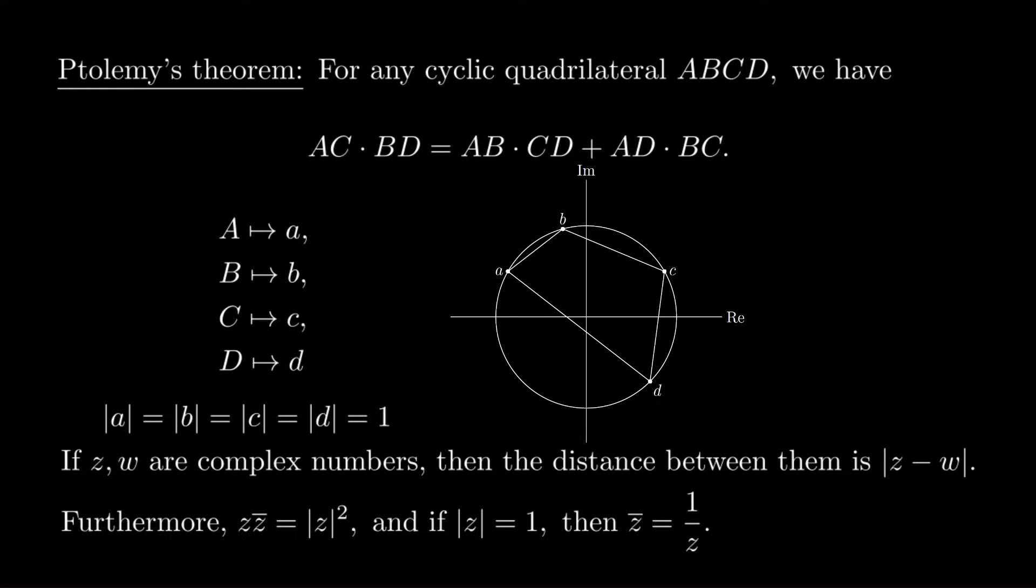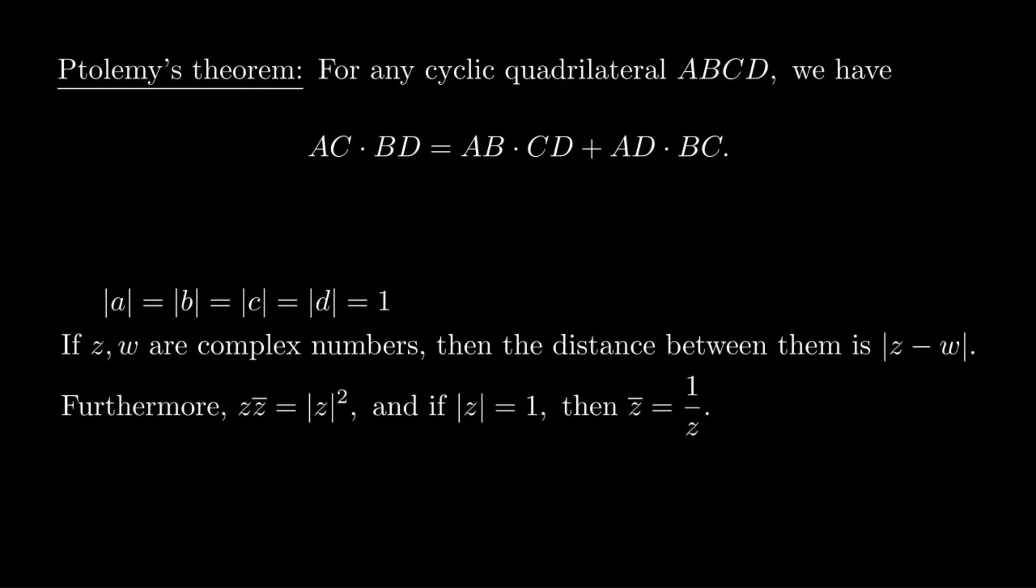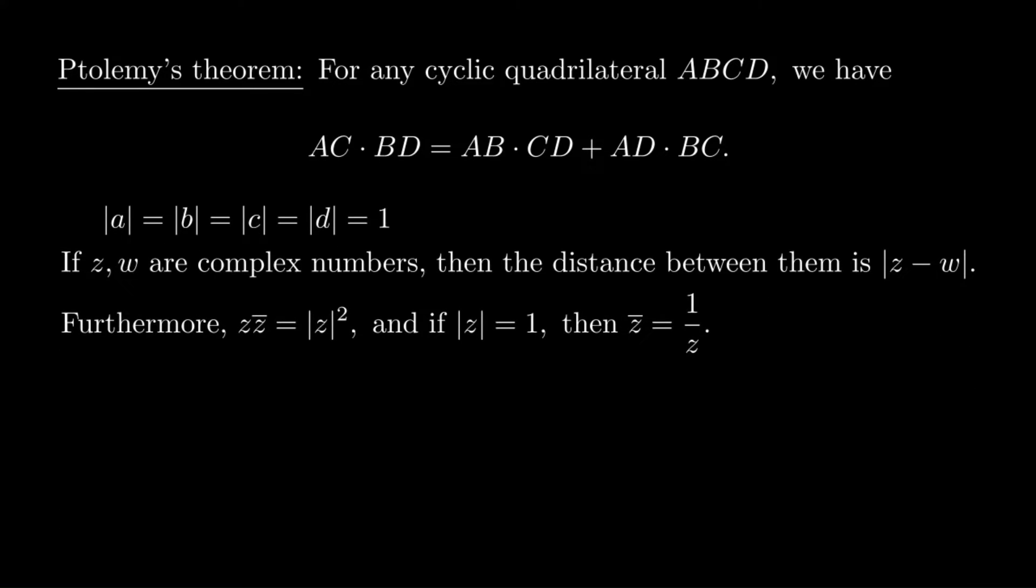The next step is just to write these six distances in terms of the complex numbers. We get six terms, each of which is the absolute value of a difference, and it's already pretty messy, unfortunately. But we're going to make it even messier by squaring both sides.